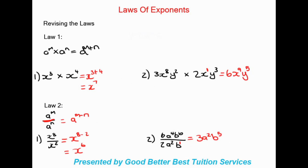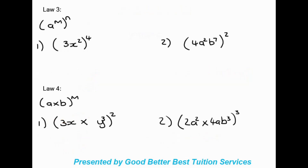Law number three: we have a to the power of m, in brackets, to the power of n. When we are putting a power to a power, we multiply those powers together. So we keep the a and the m is multiplied by the n, giving a to the power of m times n.